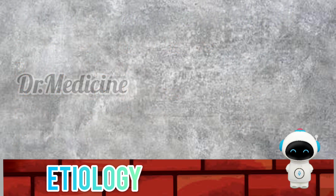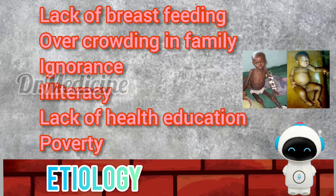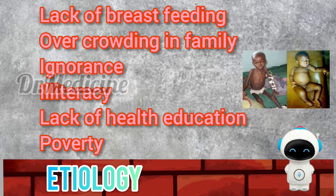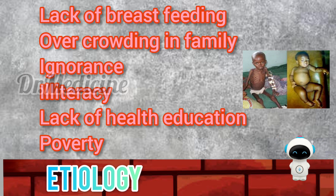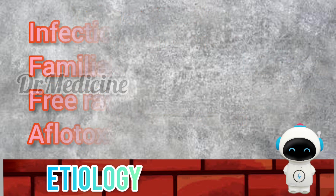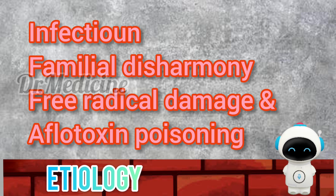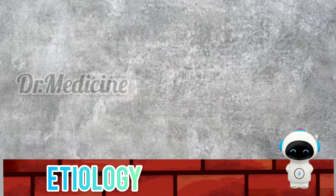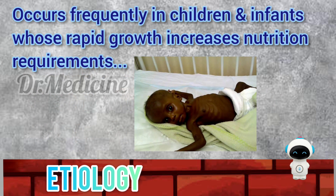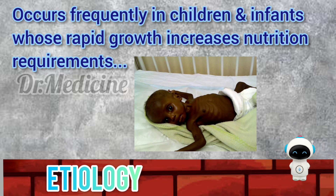Among these, the most common causes are lack of breastfeeding and giving diluted formula, overcrowding in family, ignorance, illiteracy, lack of health education, poverty, infections, familial disharmony, free radical damage and aflatoxin poisoning. Protein calorie malnutrition occurs frequently in infants and young children whose rapid growth increases nutritional requirements.